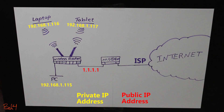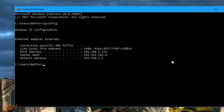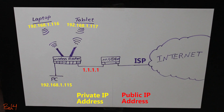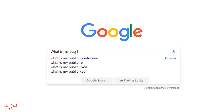If you want to know what your private IP address is, on a Windows machine you can go to the command prompt and type ipconfig. If you want to know your public IP address, you can either log into the wireless router and check the WAN section, or a faster way would be to Google 'what is my public IP address.'